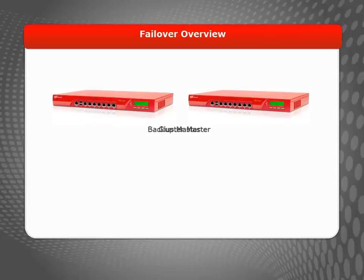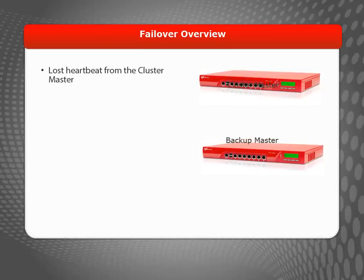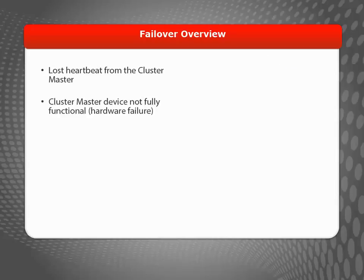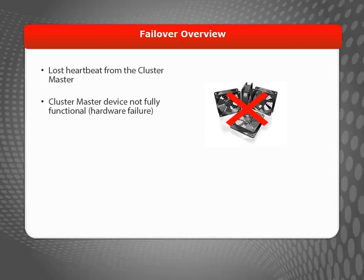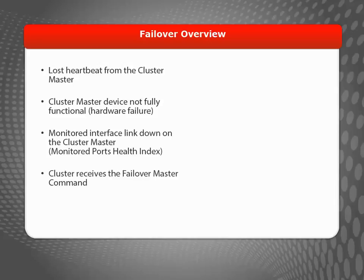When a failover occurs, the backup master becomes the cluster master, and then the original cluster master rejoins the cluster as the backup master. There are four reasons a failover will occur. First, if there are too many missed heartbeats — the cluster master sends a heartbeat to the backup master once per second, and after three consecutive missed heartbeats (configurable), a failover is triggered. Second, if any hardware errors are detected, software errors occur, or a process fails. Third, if any monitored linked interfaces on the cluster master go down. And finally, you can manually trigger a failover from Firebox System Manager.